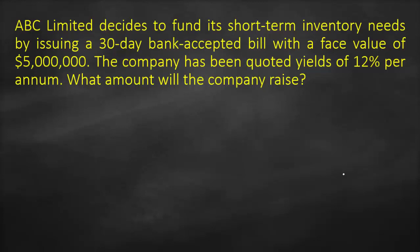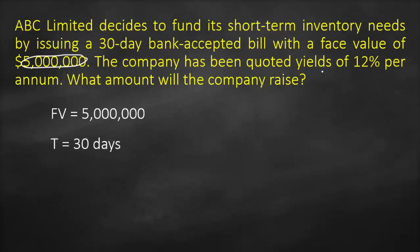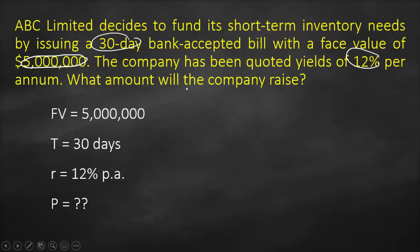In this question, we have a face value of 5 million, time of 30 days, and yield which is our interest rate of 12% per annum. What will the company raise? This means that we need to get the principal or the present value.